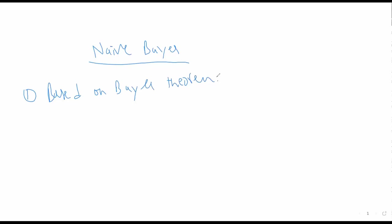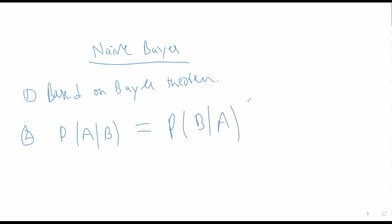Naive Bayes is about finding the probability of event A given that event B has occurred. This algorithm is also a conditional probability algorithm. We can write the formula: P(A|B) = P(B|A) × P(A) / P(B). Naive Bayes assumes that all features are independent of each other. Naive Bayes finds the probability of belonging to a class given a vector of features. If you have N features, then in the vector X there will be N values.